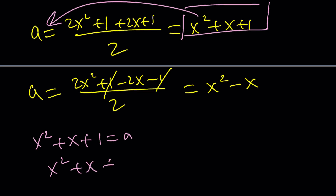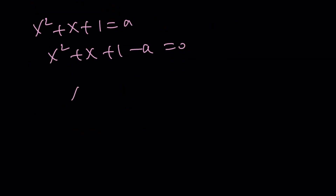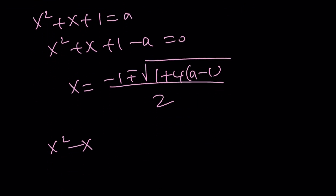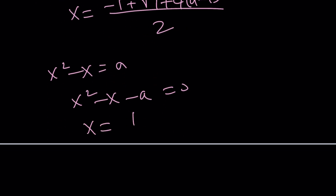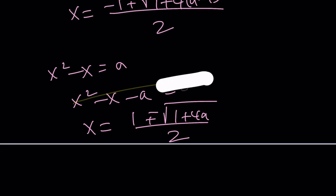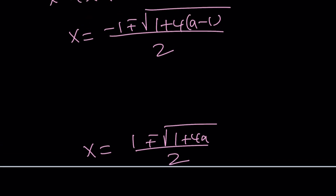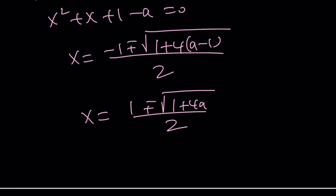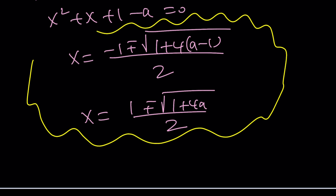This gives us two quadratic equations. Setting x squared + x + 1 equal to a gives x squared + x + (1 - a) = 0, and by the quadratic formula: x equals (-1 ± √(1 - 4(1-a))) / 2, which simplifies to x equals (-1 ± √(4a - 3)) / 2. The second equation sets x squared - x equal to a, giving x squared - x - a = 0, and x equals (1 ± √(1 + 4a)) / 2. Let me erase the intermediate work and bring these two solutions together so we can see them side by side.